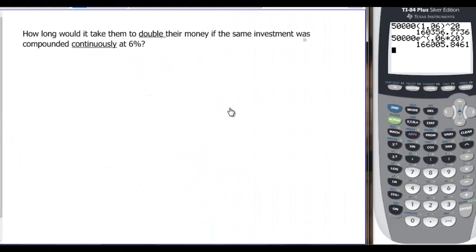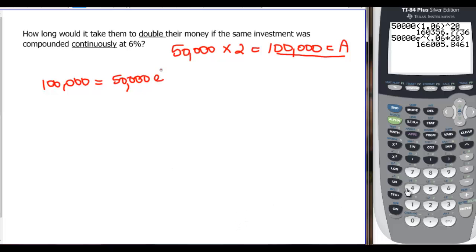How long would it take to double their money if the same investment was compounded continuously at 6%? So doubling their money, they started out with 50,000. So if we double that, that's going to give us 100,000 that we know is in the account. So that's the A. 100,000 equals the P, 50,000, times e to the R, which is 0.06. But we don't know how long, so it's T. So there's our equation. We want to get to this base with this exponent all by itself. That's always where we're going when we have an exponential. So we divide by 50,000 and 100,000 divided by 50,000 is going to be 2 equals e to the 0.06T.